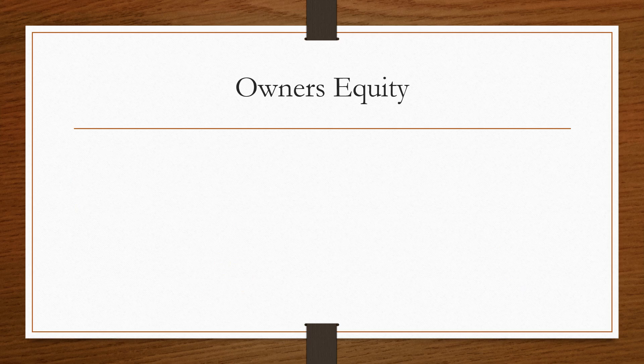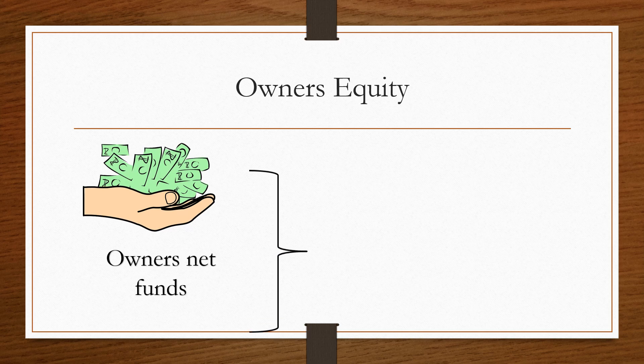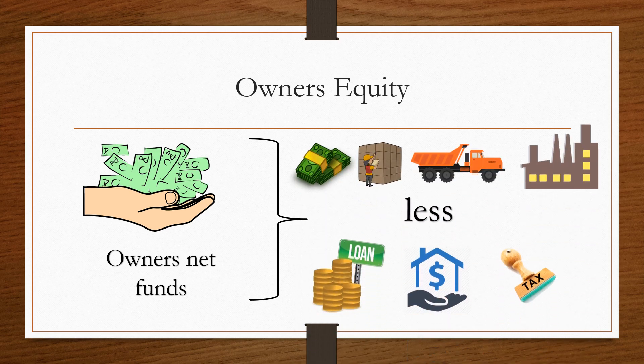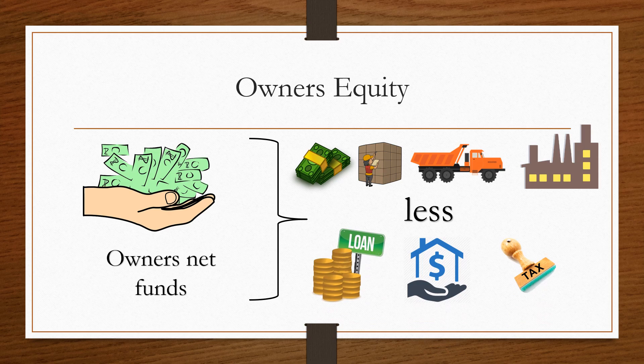The last part of the equation is owner's equity. Owner's equity is basically the net value of your business — in other words, all your assets less your liabilities equals your owner's equity, which represents the net value of your business.